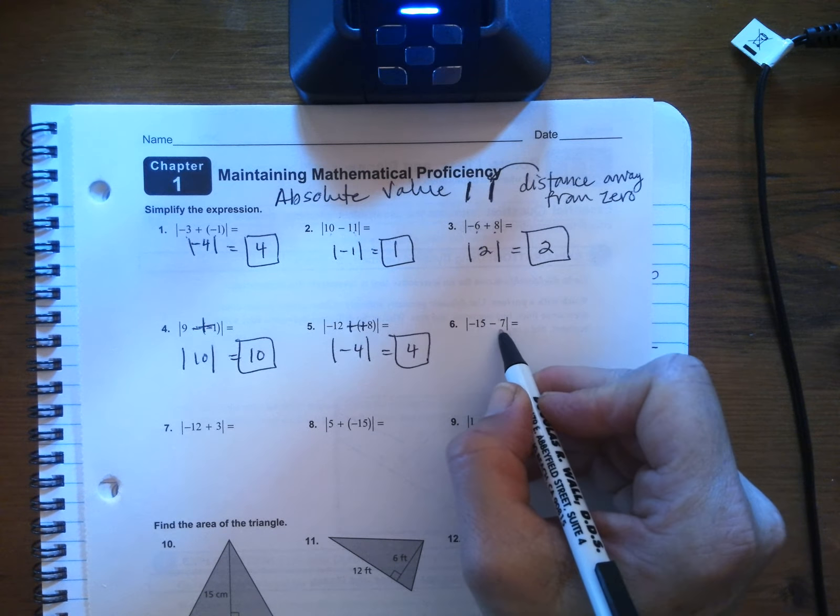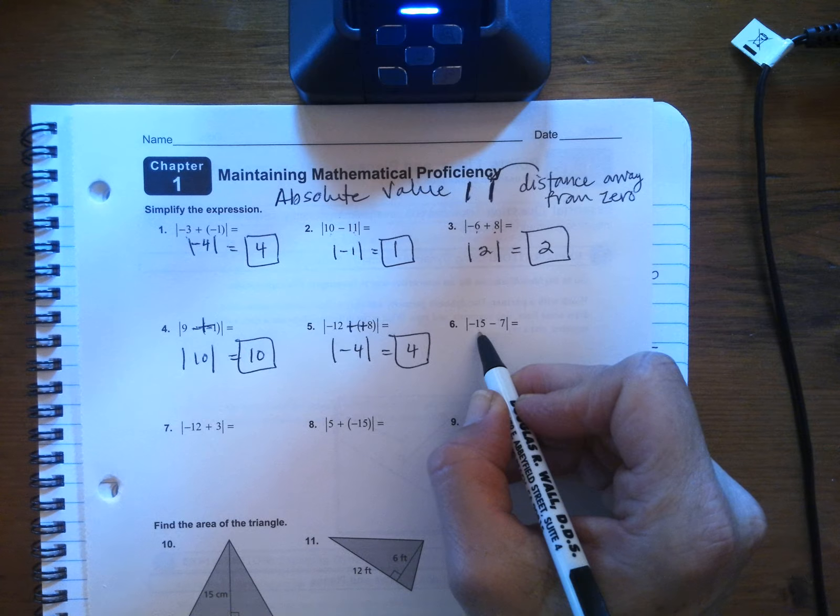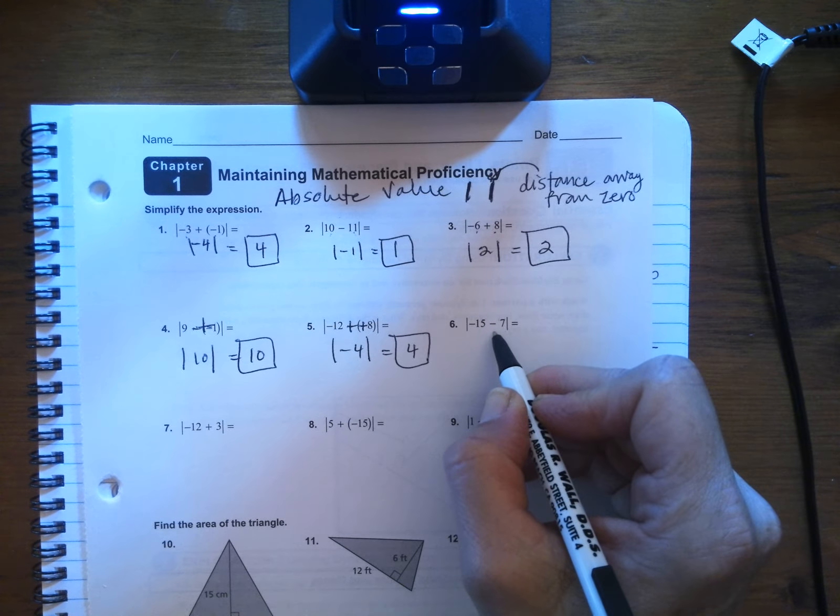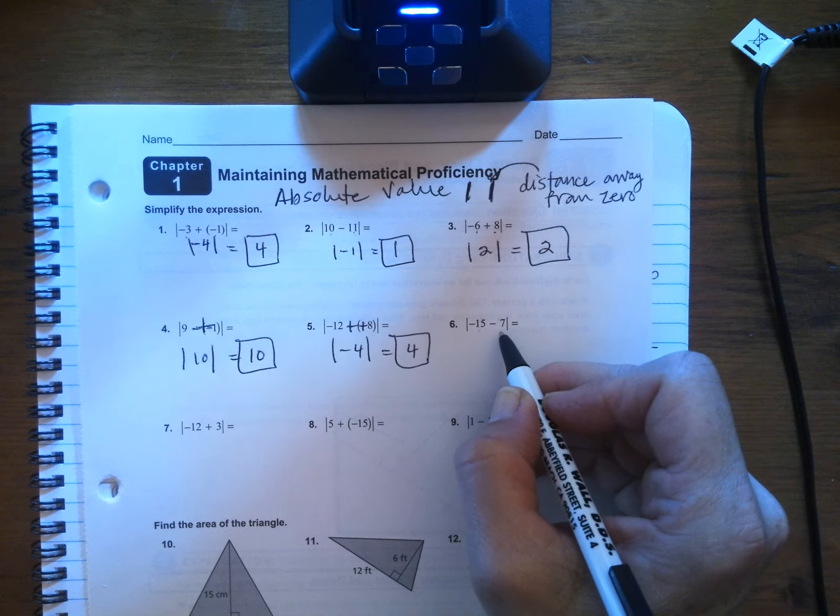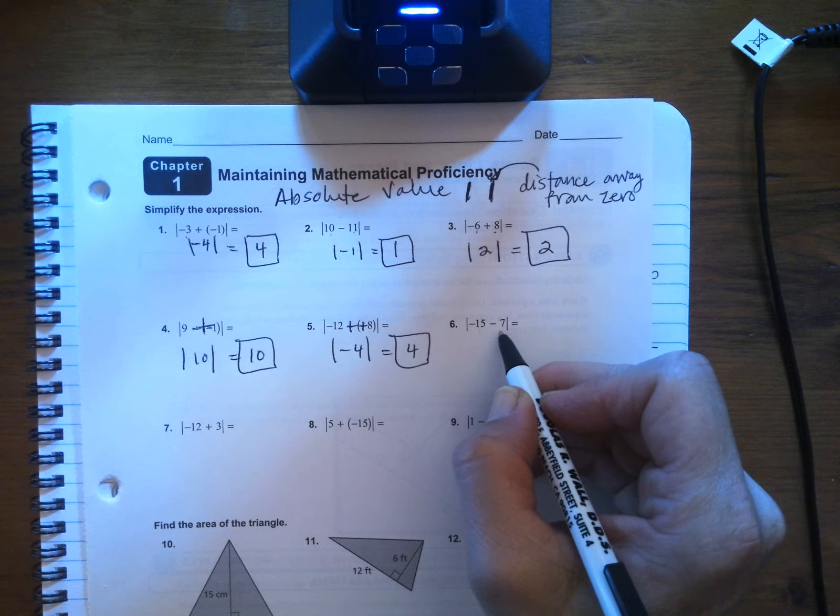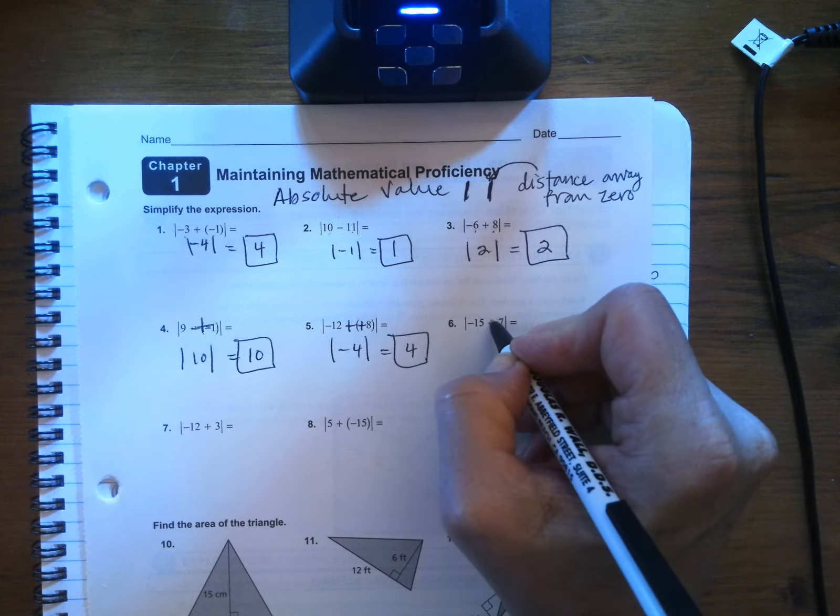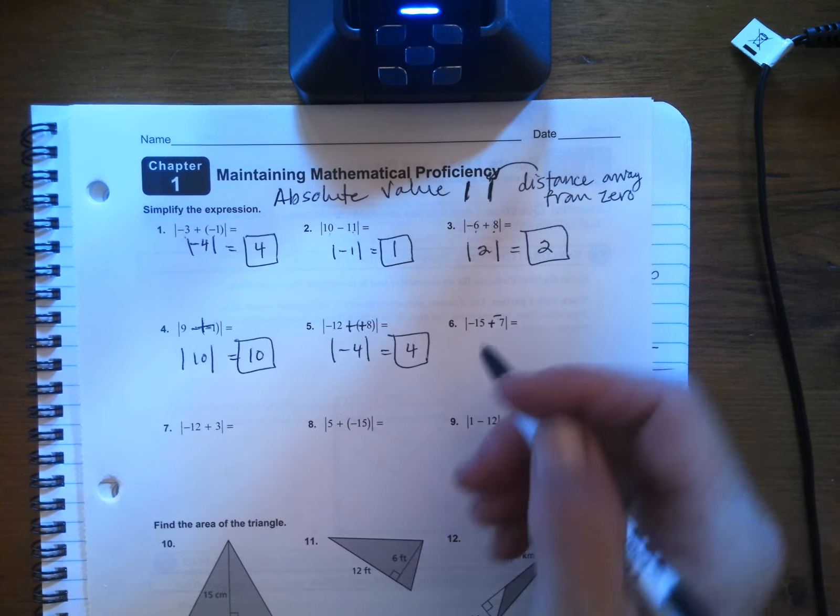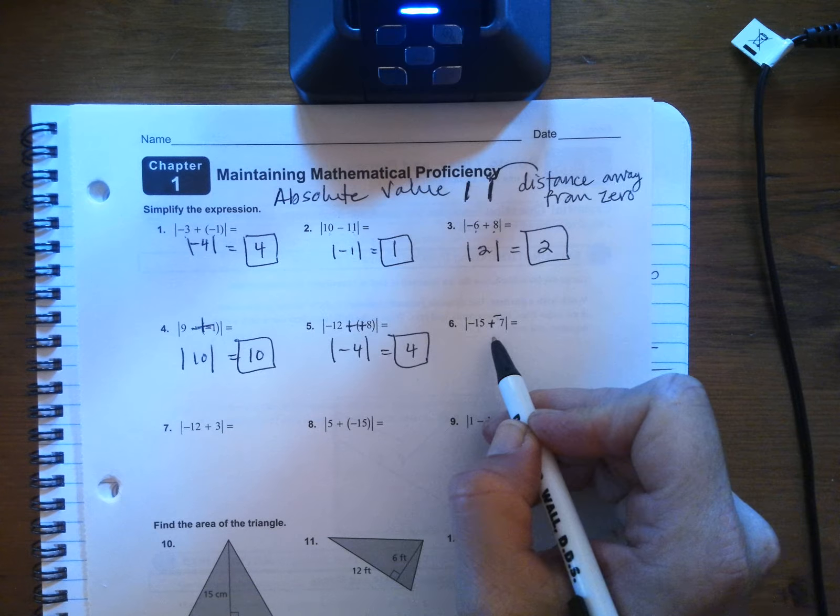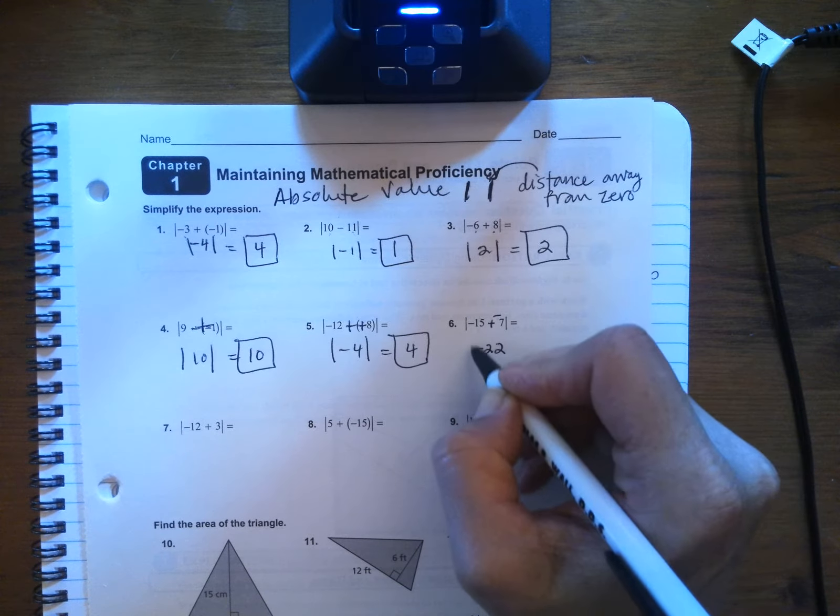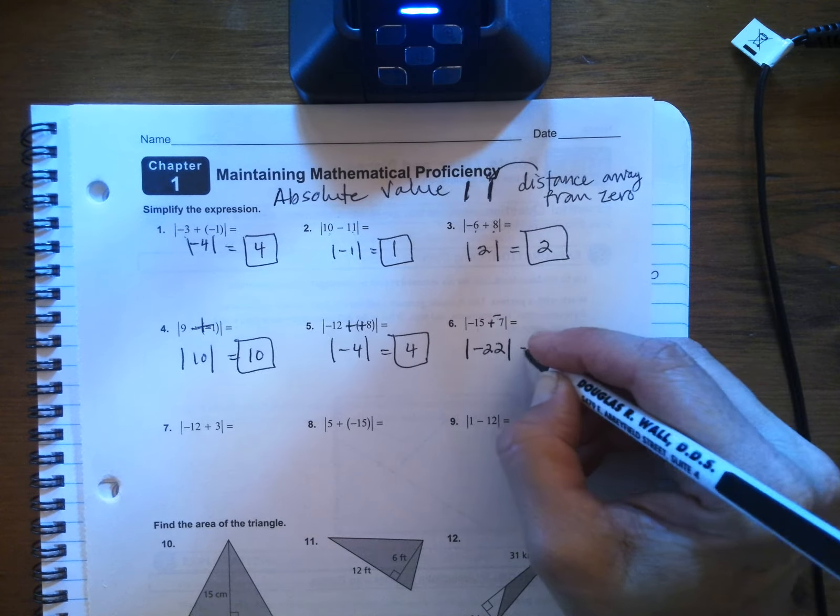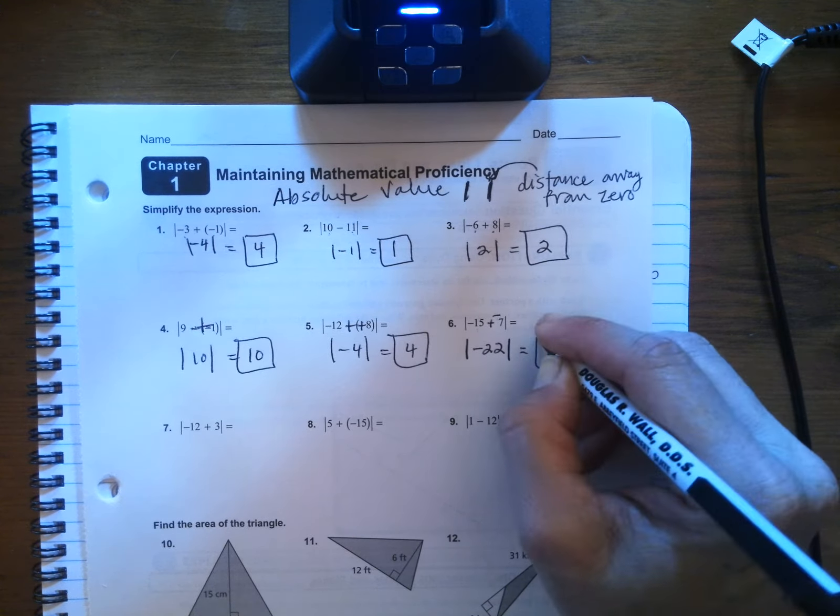Negative 15 minus seven. You have 15 negatives, and you're taking away more numbers. You're taking away positives. So I don't know how your teacher taught you last year, but I always like to change these to adding negatives. That means I'm going to get more negatives when I add these, so I'll get negative 22 when I add 15 negatives and seven negatives, and so that absolute value is 22.